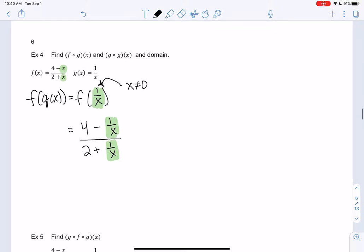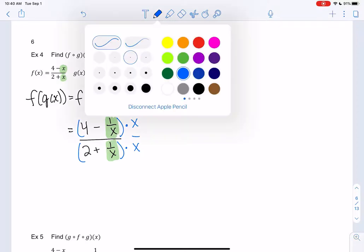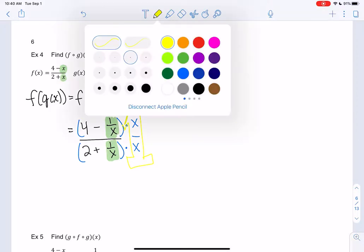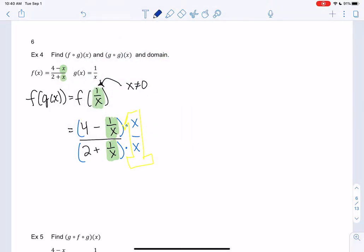So how do we simplify this? So the way we simplify when we have fractions in fractions, we multiply by the denominator, which is x. And that's allowed because I'm multiplying by 1, right? x over x is 1. It's like a big fancy 1. That's allowed because I'm multiplying by 1. So we distribute the x. So we get 4x minus 1. And then we get 2x plus 1. And that's my f of g.